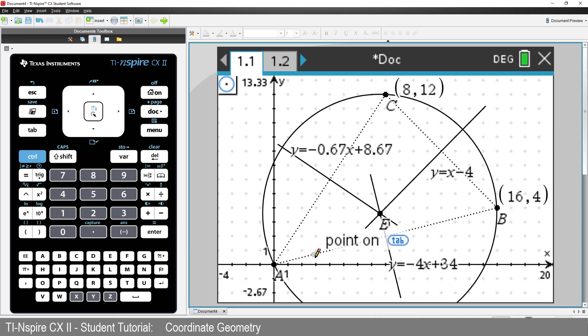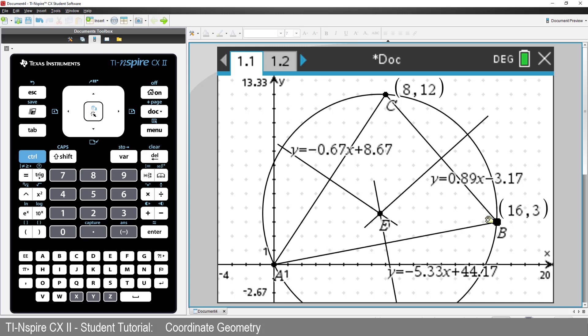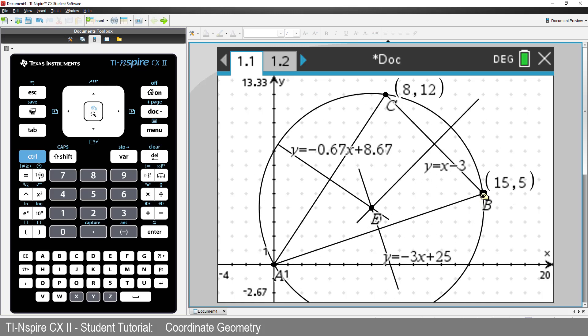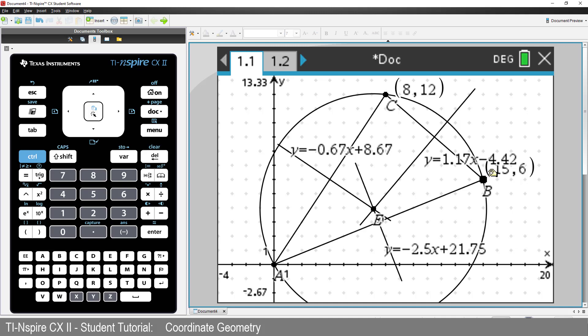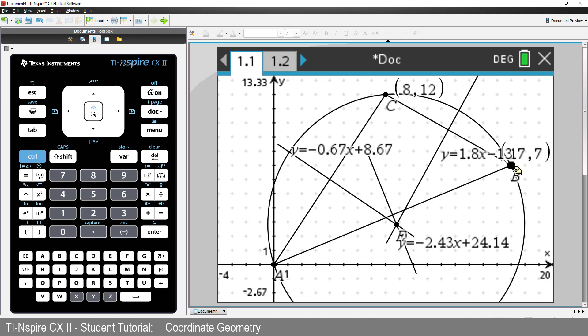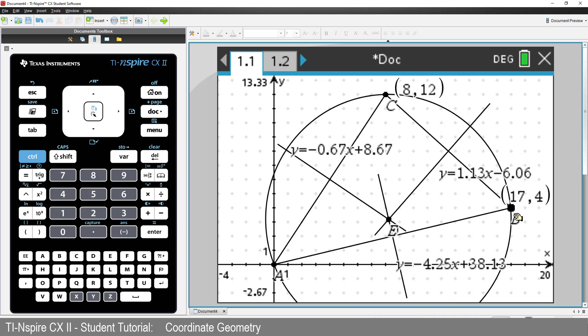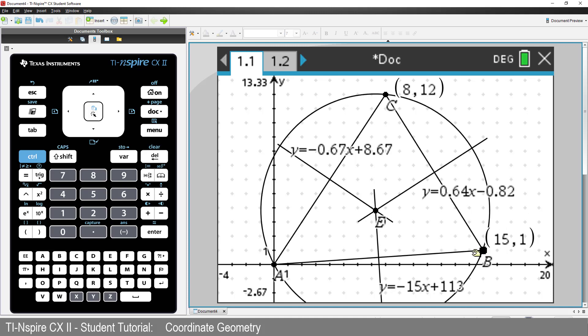Now our geometry construction in the graphs application is dynamic. So we can move any of the triangle's vertices, and the equations will update automatically, and see our circle continues to pass through all the vertices.